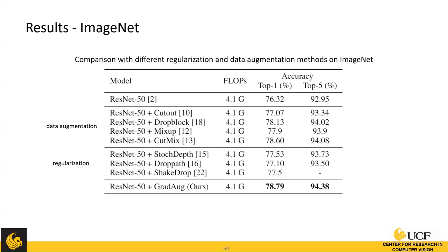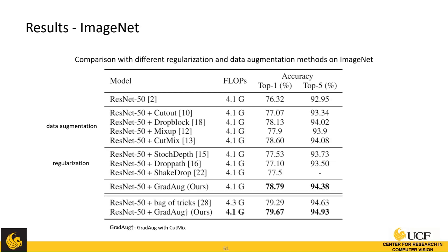On ImageNet, our method outperforms all state-of-the-art data augmentation and regularization methods. Furthermore, our method can be combined with augmentation methods like CutMix, further improving performance and even outperforming the bag-of-tricks baseline — which integrates all known training tricks. The number of parameters doesn't increase because sub-networks share parameters with the full network; the result reported is the full network performance.